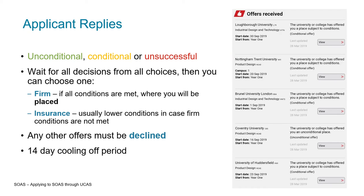It's not a bad thing to reach out to universities — if you've received all decisions bar one, you could reach out to ask for that decision in order to move forward. Your firm choice is where you'll be placed if you meet all conditions — it's your first choice. Your insurance choice is your backup option, so it's usually good to have slightly lower entry conditions than your firm offer unless you're very sure you'll meet both. All other offers will need to be declined. There is also a 14-day cooling-off period if you want to change your firm or insurance choice.